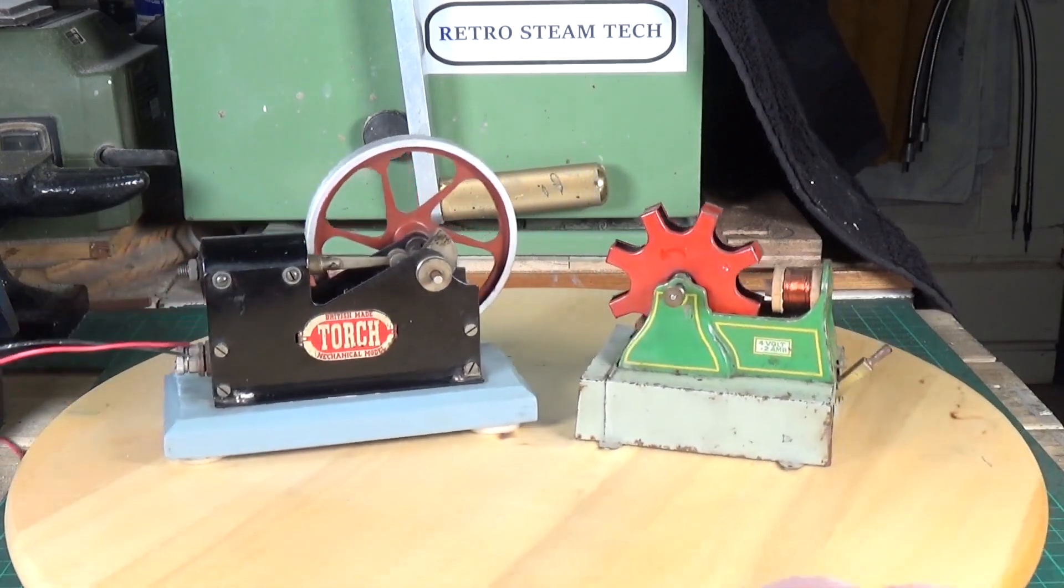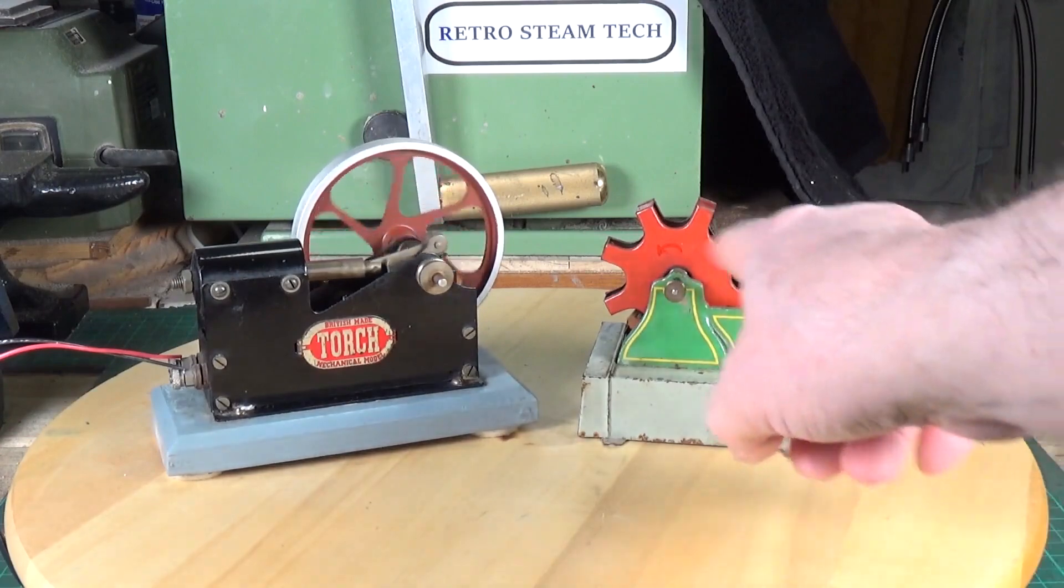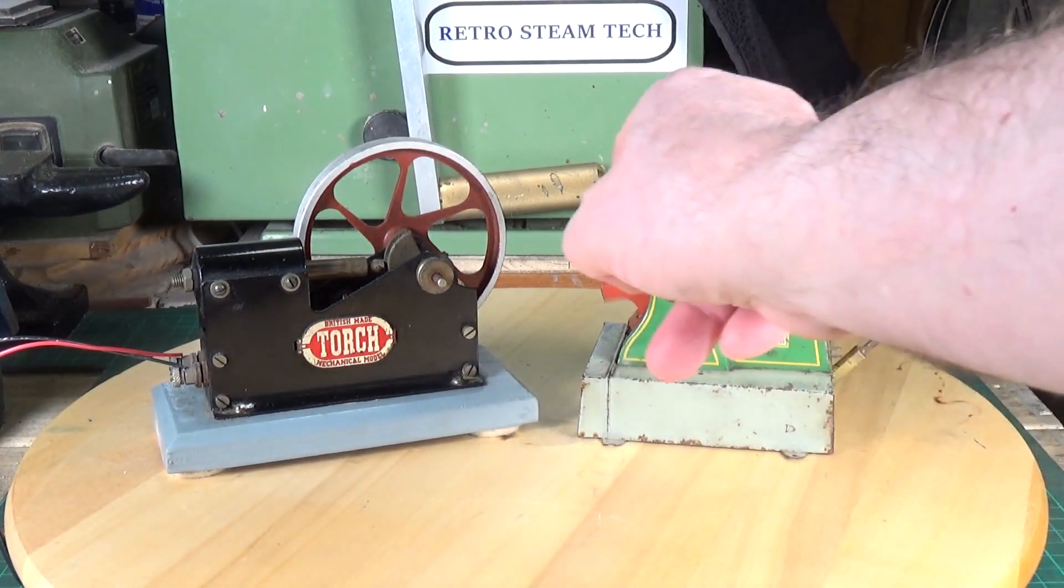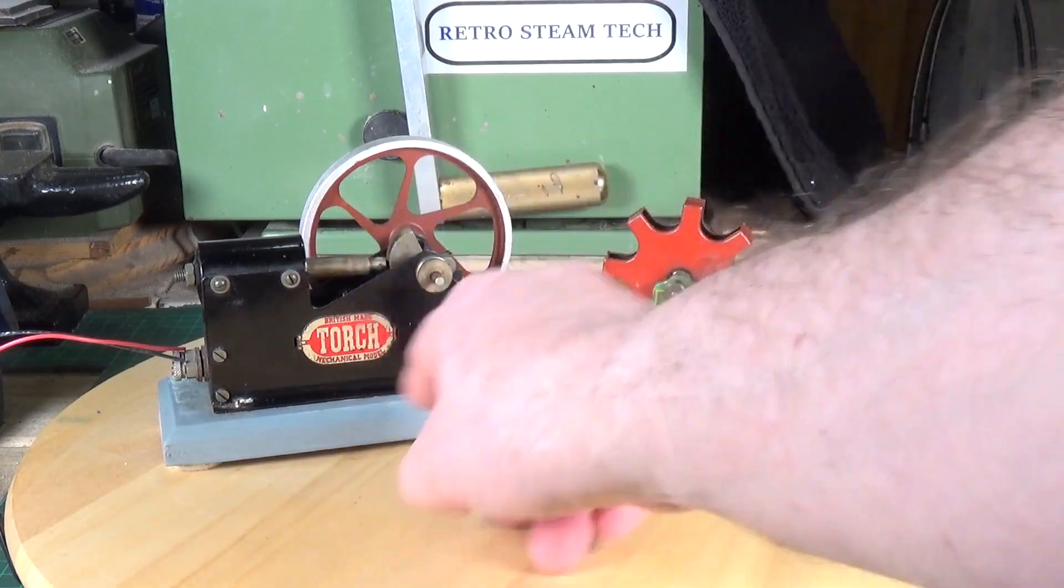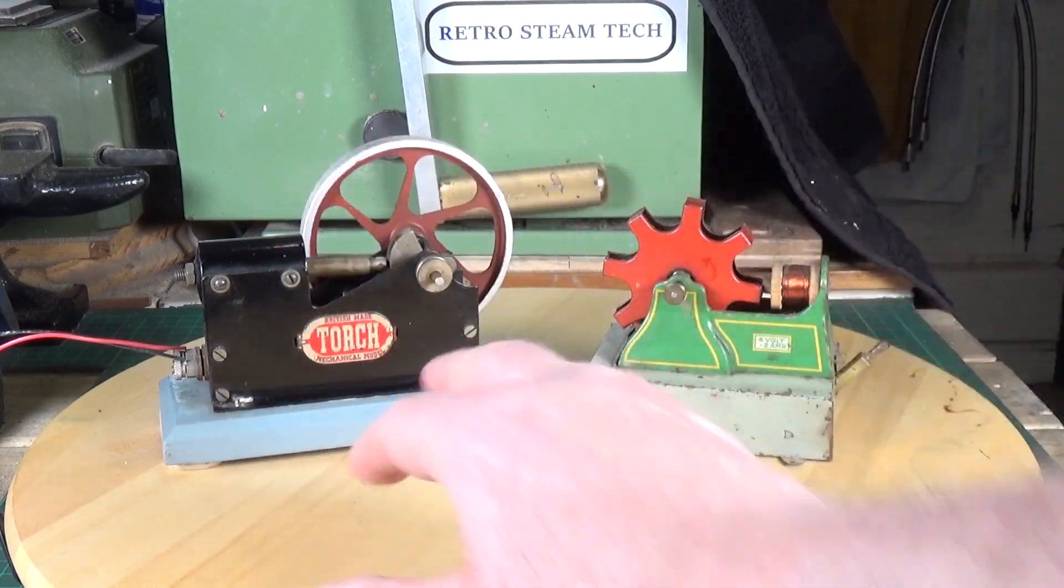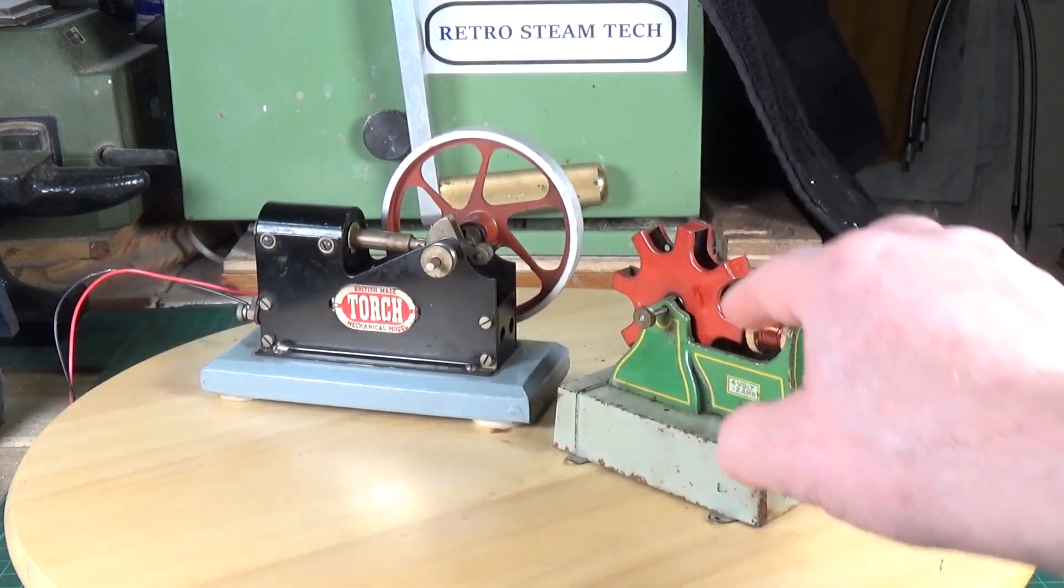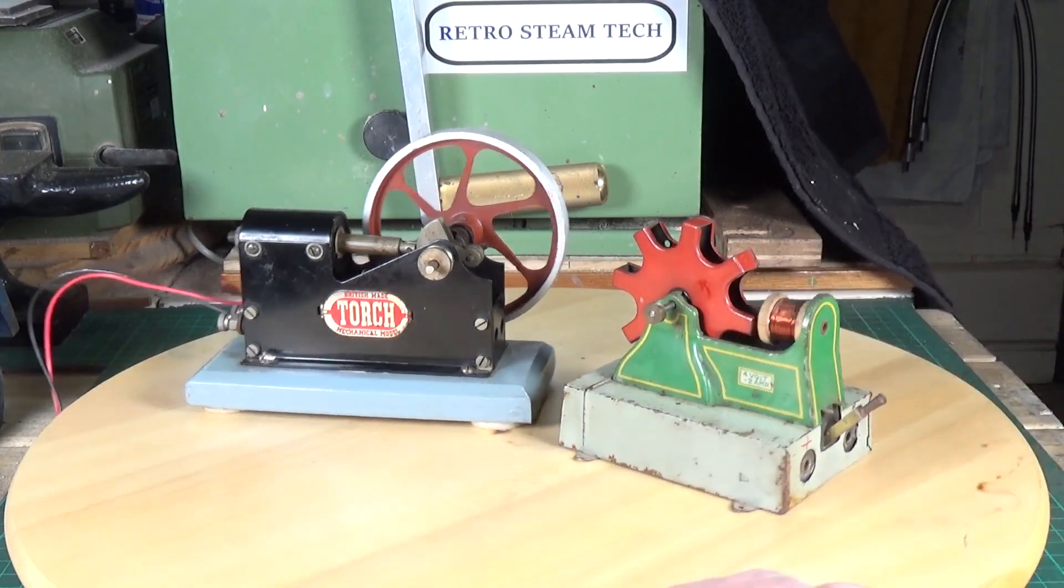The torch engine is a solenoid engine, whereas this is some sort of an electromagnet engine. And they're very, very different construction. This is more industrial, like steel plate, very robust construction, whereas this is quite flimsy, pressed, folded tin plate, very thin material.